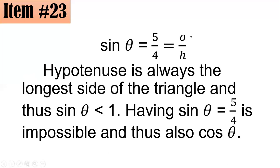Since the hypotenuse is larger than the opposite side, we expect the sine value to be less than 1. Having sine theta equal to 5/4, which is greater than 1, is impossible. Thus cosine theta is also impossible. Letter D is the correct answer.